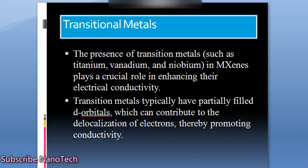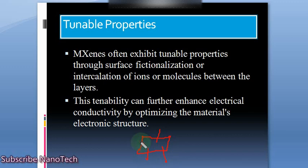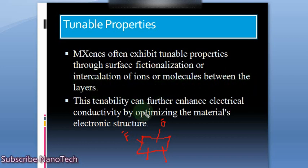The fourth and last reason for MXene's higher electrical conductivity is tunable properties. When we etch the MAX phase to obtain MXene sheets, the etchant introduces additional functional groups on the upper or lower surface of the sheet. These functional groups could be fluoride, hydroxyl, or oxide groups. Due to these groups, MXene exhibits tunable properties through functionalization or intercalation of ions or molecules between the layers, which can further enhance electrical conductivity by optimizing the material's electronic structure.